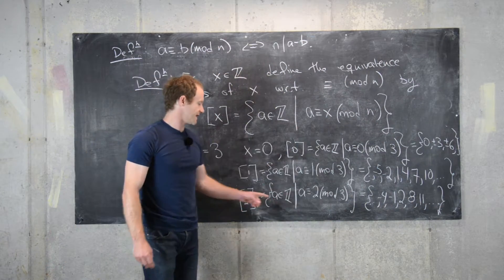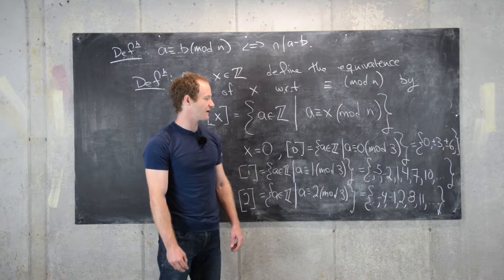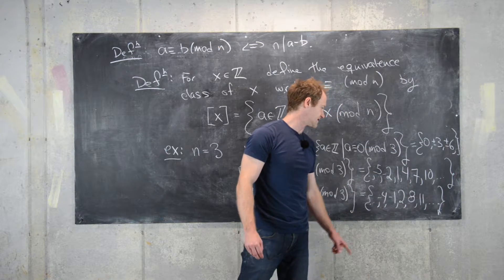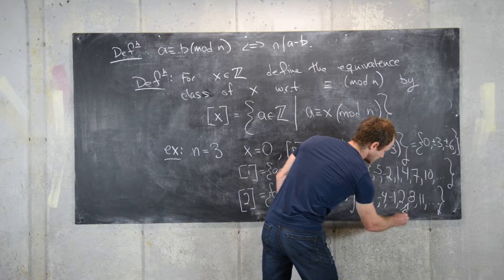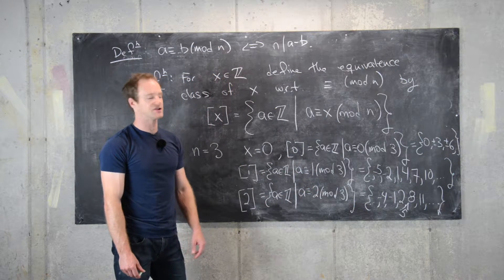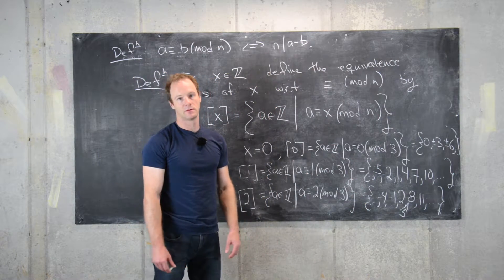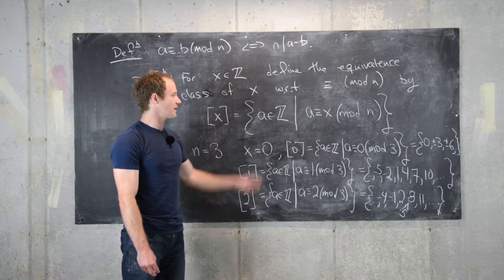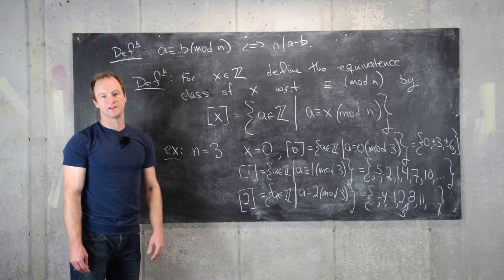Notice that these three sets together contain all of the integers — if we want to find 1 it's in the first set, 2 is in the second, 3 is in the first, 4 is in the second, 5 is a member of the third set, and so on. None of these sets overlap, so one way to say this is that these sets partition the integers. We'll clean up the board and then look at one more property of congruence modulo n.